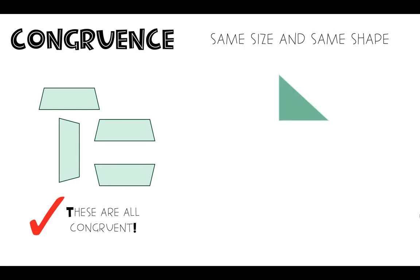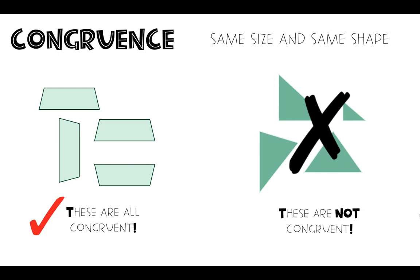Now if we look at these triangles right here, we have four different triangles. We have some that are big, some that are equilateral, some that are right triangles. Because they are not all the same size and same shape, these are not congruent. We want them all to look the same.